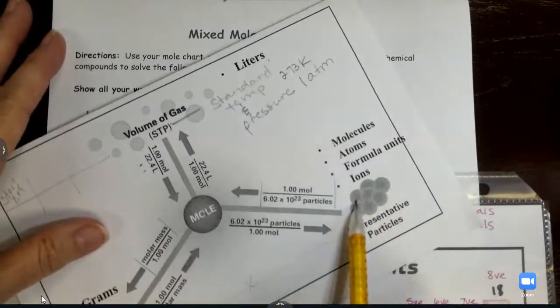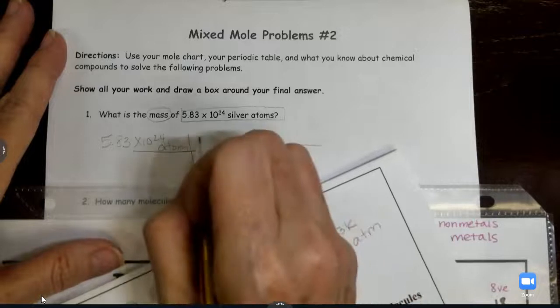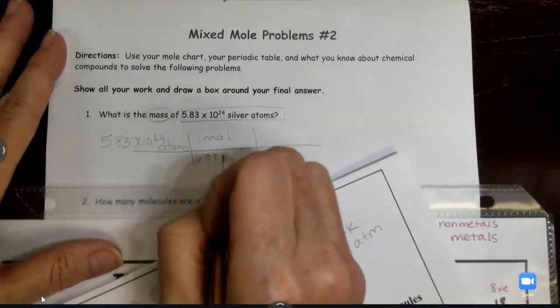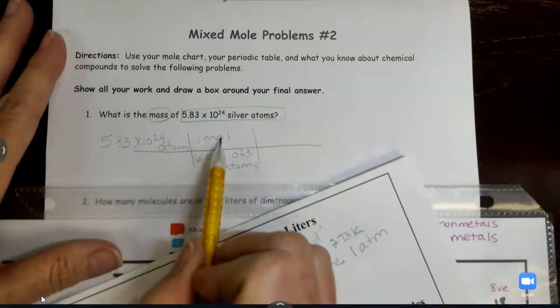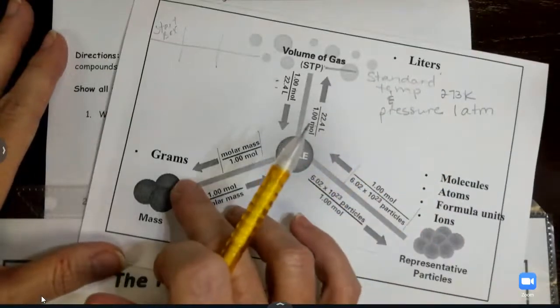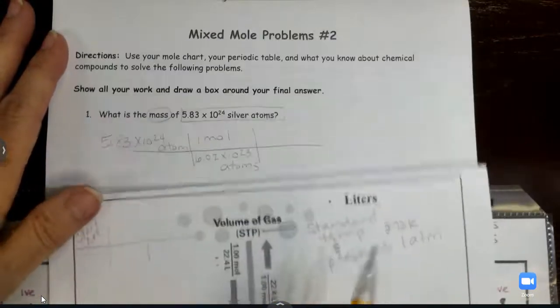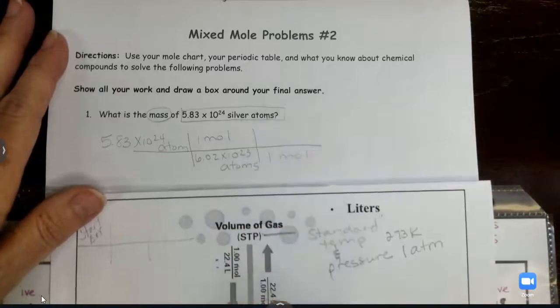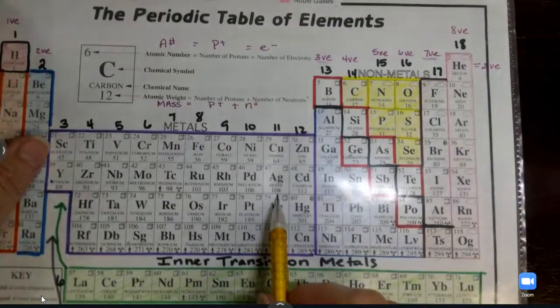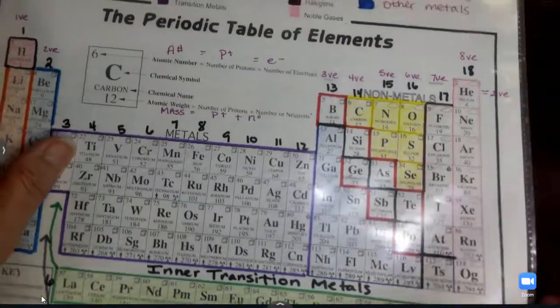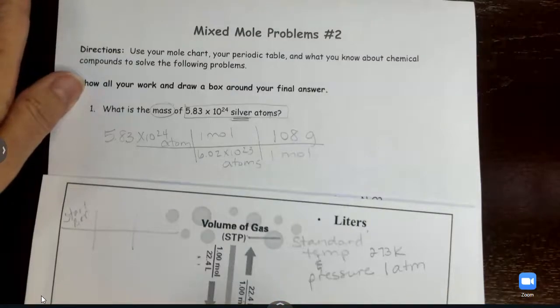So on that first train track, going from atoms to moles, it says put one mole over Avogadro's. So one mole over 6.02 times 10 to the 23rd atoms. So that's atoms to moles. Now I need to get from moles to mass. So it says I'm going to put molar mass on top, one mole on the bottom. Molar mass of what? Silver. So we need to look at silver on our periodic table. It says the mass of silver is 108. So that goes there. Mass is in grams.